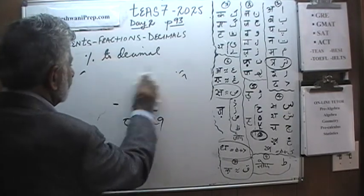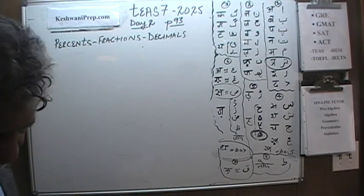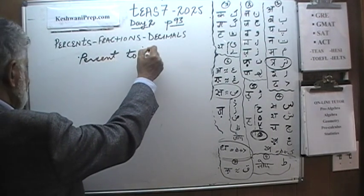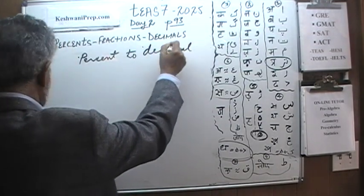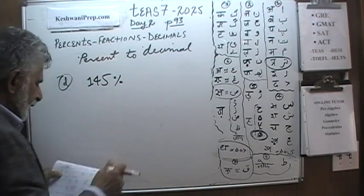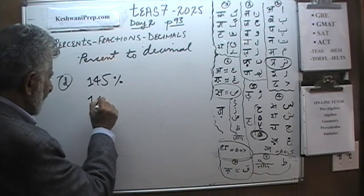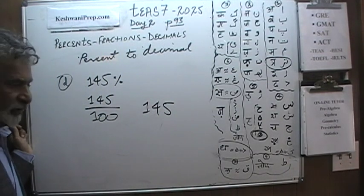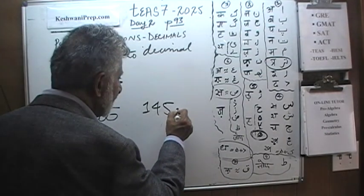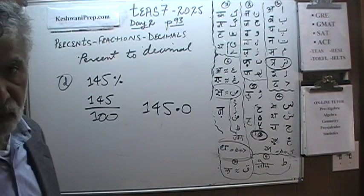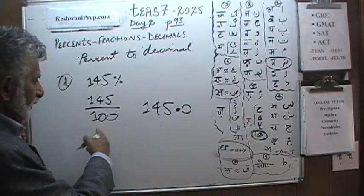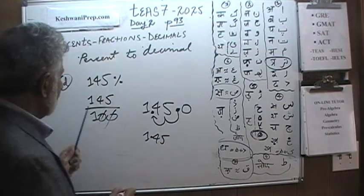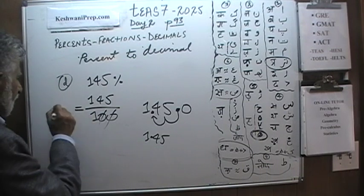Part D is the same thing — converting a percentage to a decimal. We have 145%. Again, 145% means 145 divided by 100. 145 as written looks like a whole number, but we have to understand there is a decimal point there: 145 is the same as 145.0. We pick up our decimal and since we are dividing, we move it two places — one and two. The decimal ends up here and it becomes 1.45. So 145 divided by 100 equals 1.45.